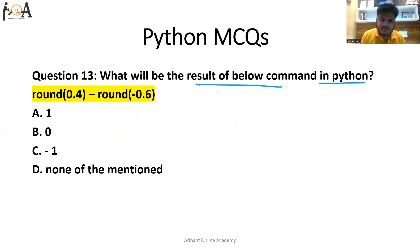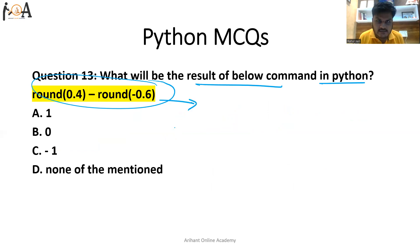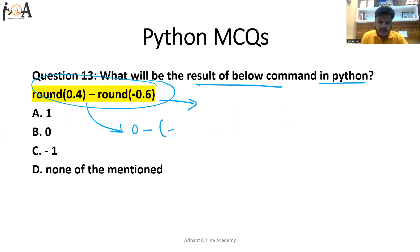Question number 13: what will be the result of the following command in Python? Here, round(0.4) converts to the nearby value, which is 0. Then minus 0.6 would round to minus 1. The resultant value is 0 minus (minus 1), which equals 1.